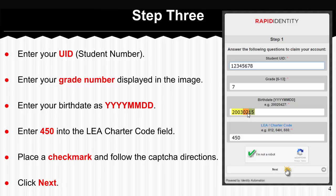If the birth date month was 11, that would be November. The last two digits are going to be the day that your birthday is on. So this person was born in 2003, in the month of February, on the 15th. You'll want to put your birth date in in this exact format.